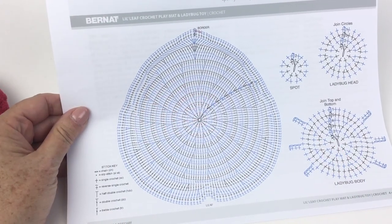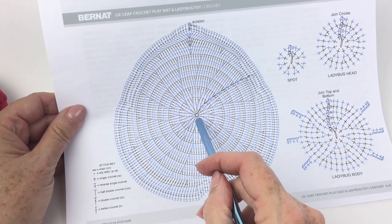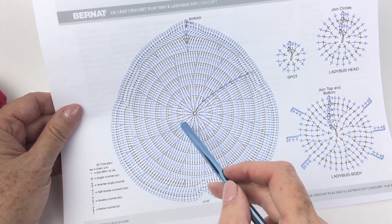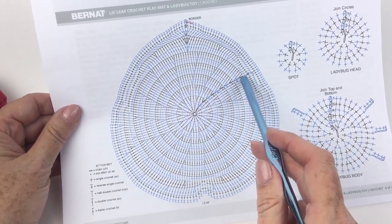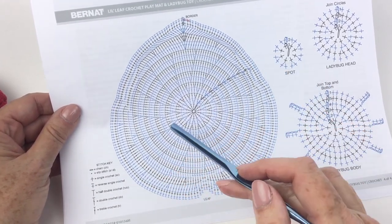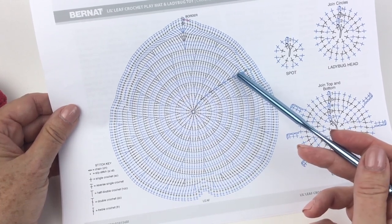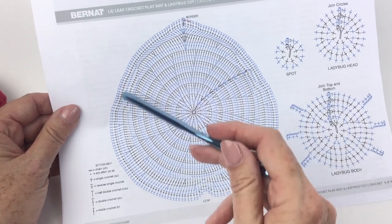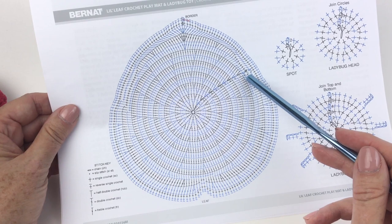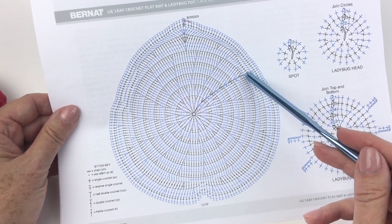Taking a look at the diagram for the leaf mat itself, you can see that there's your chain four in the beginning, and your chain three, and then your double crochets in the ring, and then the first 11 rounds are simply to have the circle grow from the center out. So don't think that you're messing up the shape. Until you get that 11th round completed, it's a big giant circle. You're not going to see the leaf shape until you get to rounds 12, 13, and 14.